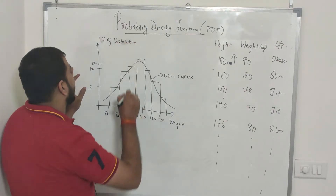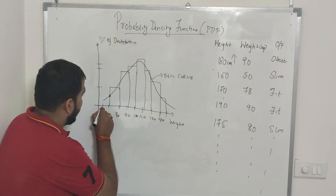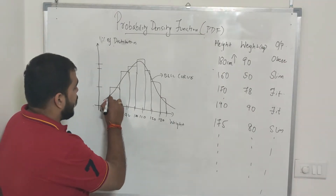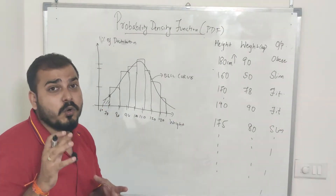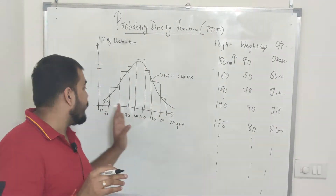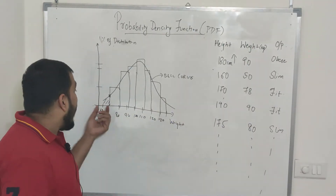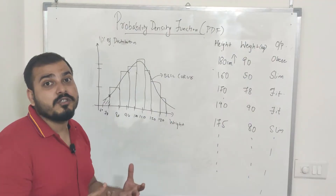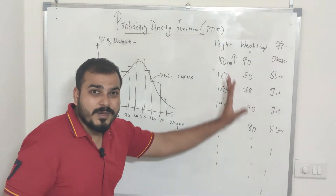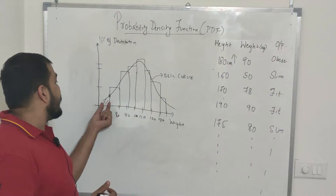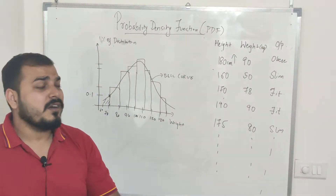Let's understand what the Y-axis means. If I consider a point — say between 60 to 70 on the X-axis — the Y-axis value tells us what percentage of the total distribution is present in that region. For example, if this value is 0.1, it basically indicates that 10 percent of the distribution is present in that location.